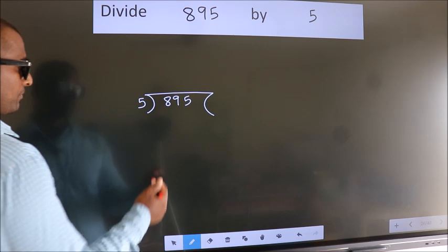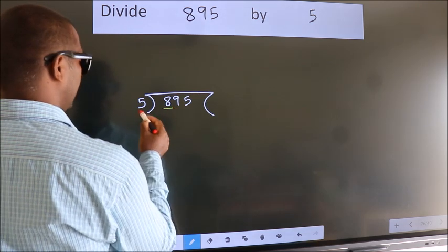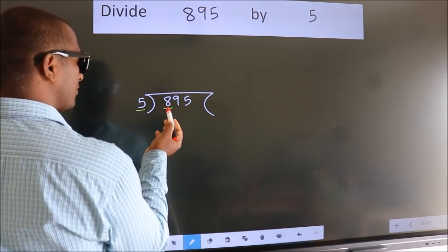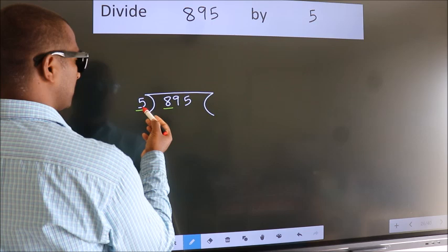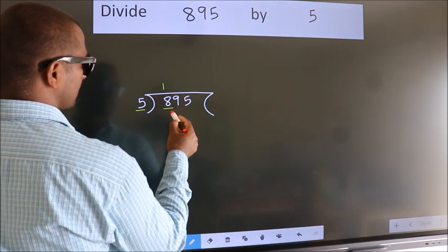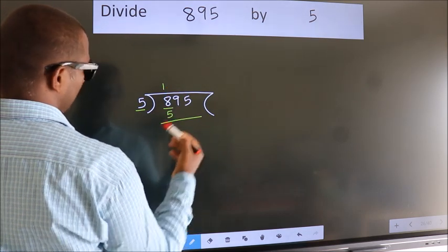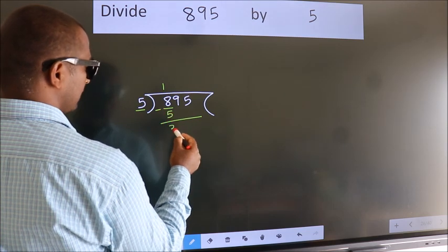Next. Here we have 8, here 5. A number close to 8 in 5 table is 5 once 5. Now, we should subtract. We get 3.